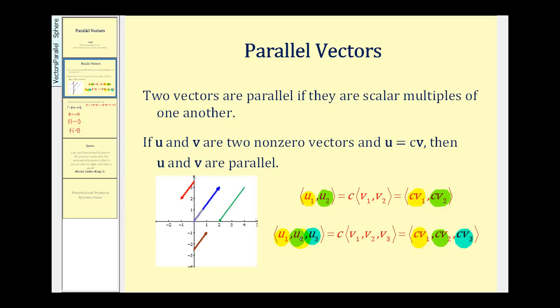In R3 we have a similar situation, except now we not only have the x component and the y component, but we also have the z component. We can pick any pair, find the value of c, and then check to make sure it holds true for the other two components.